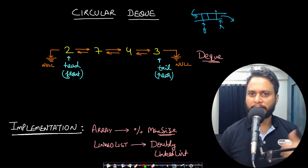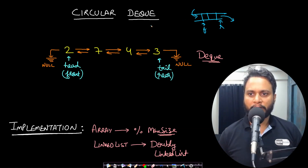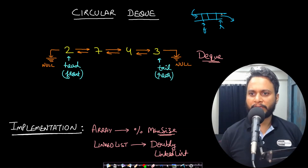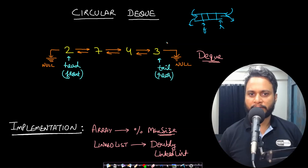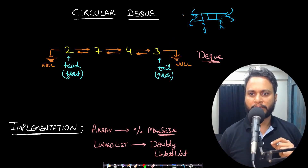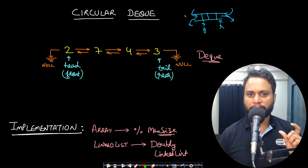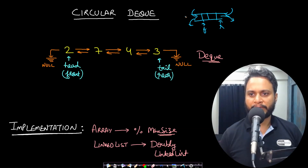Generally we append at the rear and take out from the front. A doubly ended queue can insert and remove items from both ends — that is how it is different from a simple queue.